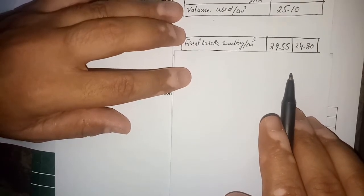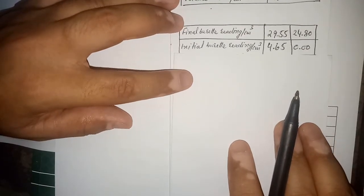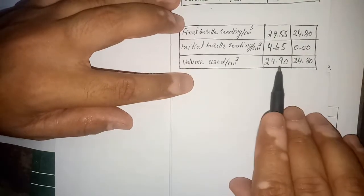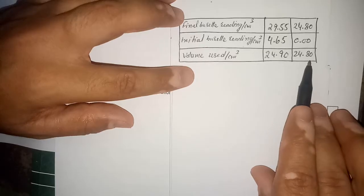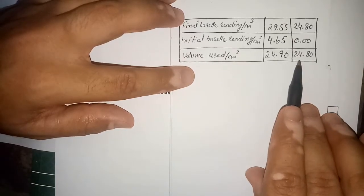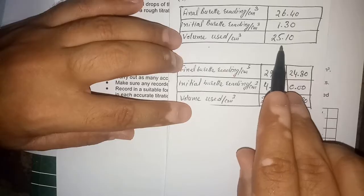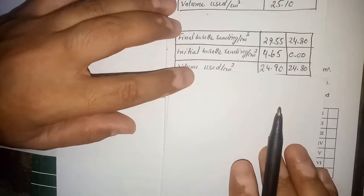It is advised to perform the titration carefully the first and second time, then adjust your readings according to the format provided. The final and initial readings must give two consistent results with a difference of 0.1 — for example, 24.90 and 24.80. The difference between the rough titration and the first valid titration should be at least 0.2.